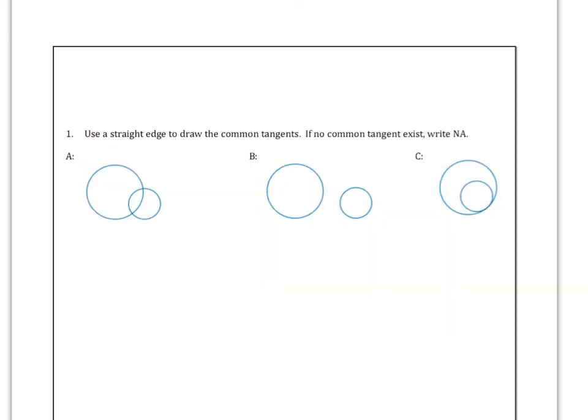Please take a minute and pause the video. You're going to try to draw in all common tangents to the circles. In example A, draw in any lines that can touch both circles in exactly one point each. When you're done with A, B, and C, go ahead and unpause.